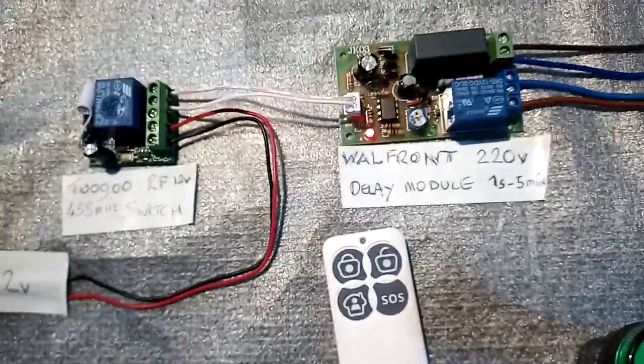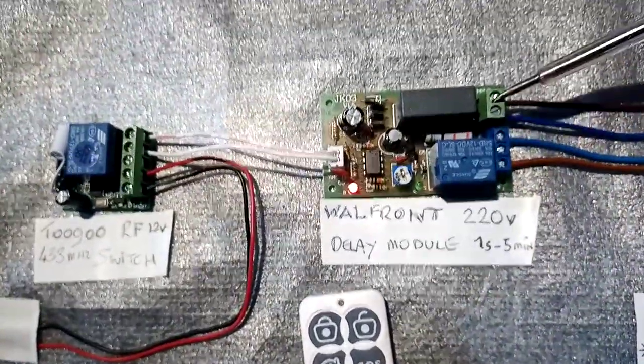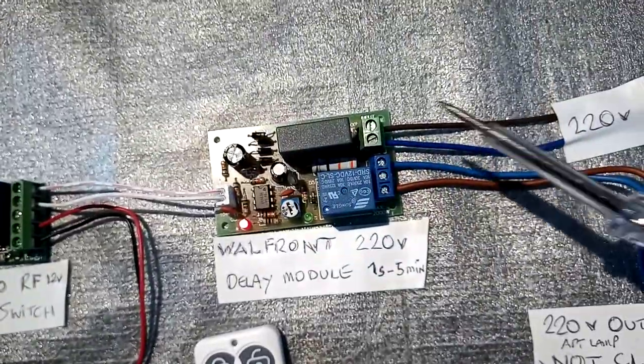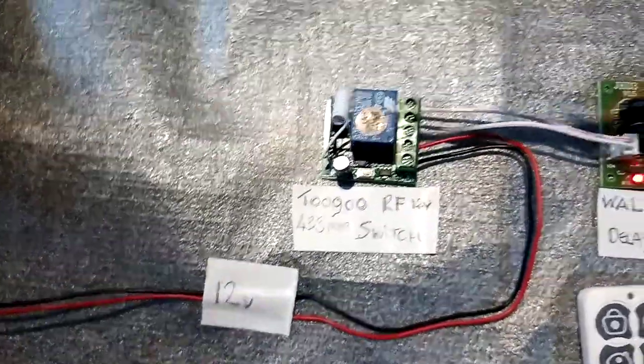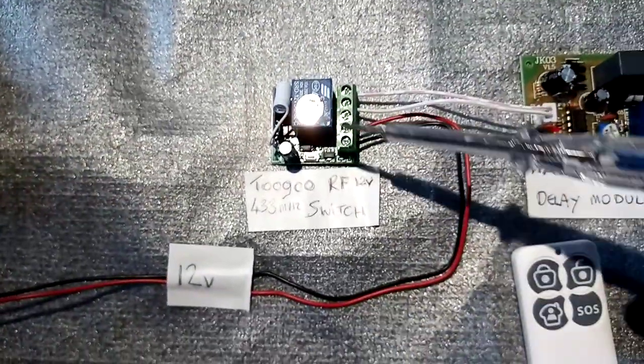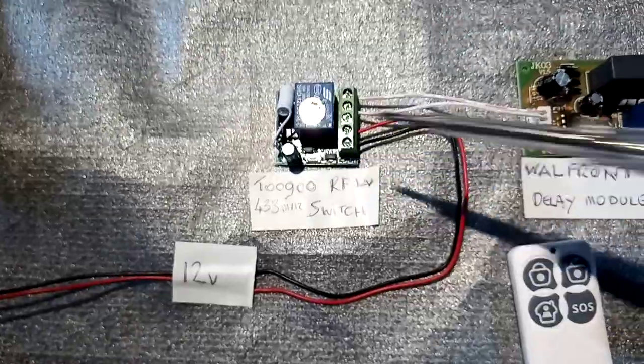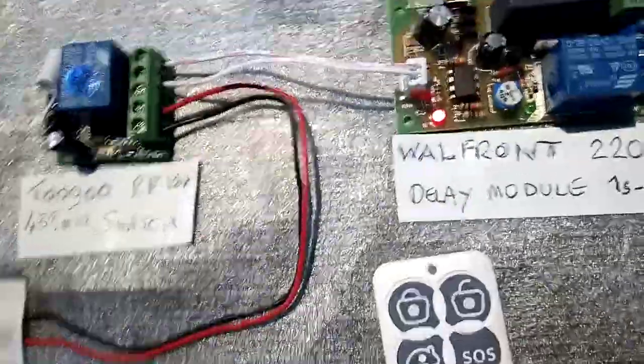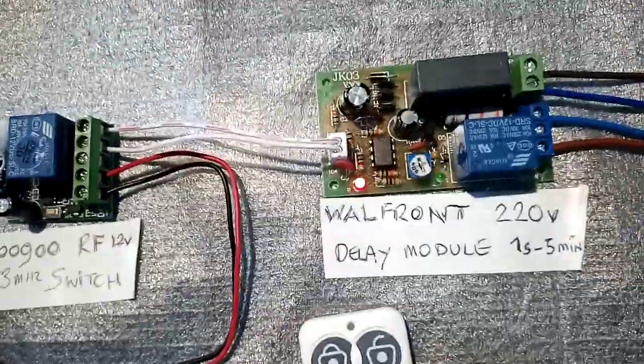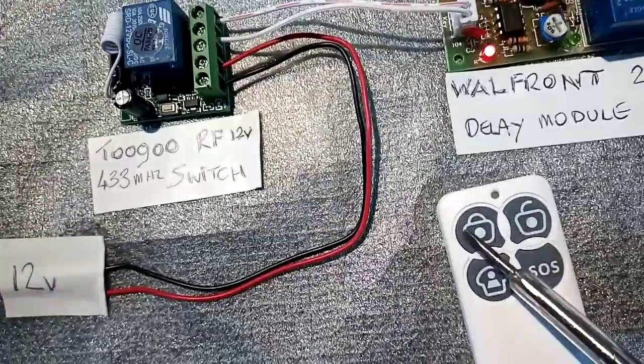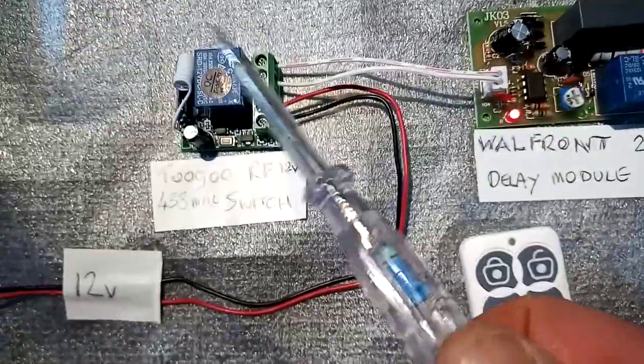It's quite simple. All you need is 220 volts on this module, you need 12 volts on this one. So you could just use a transformer, 12 volt transformer, to feed this little switch here, this relay. And what it does is that you press the paired button with this.